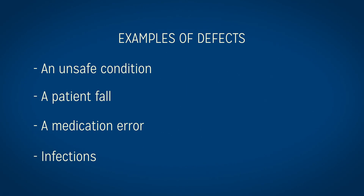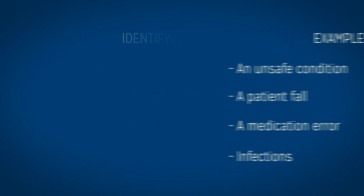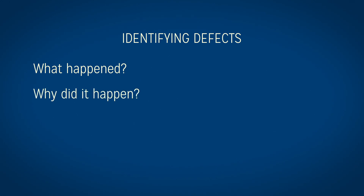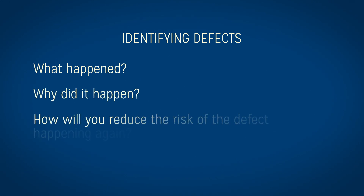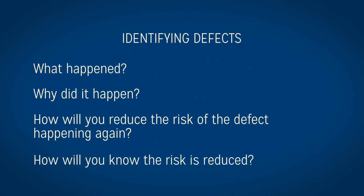Questions you should ask when identifying defects include: what happened, why did it happen, how will you reduce the risk of the defect happening again, and how will you know the risk is reduced.